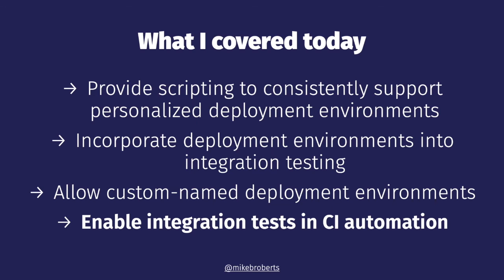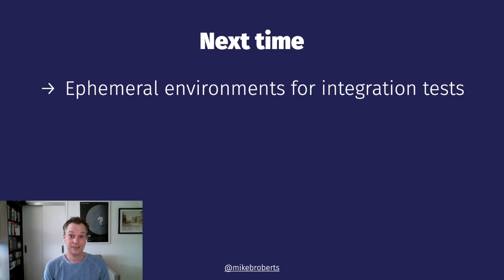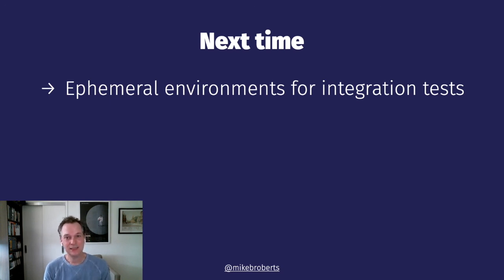That wraps it up for this episode. Today I built on the integration test work from last time. First, I provided scripting to consistently support personalized deployment environments. Then I incorporated these deployment environments into integration testing. Third, I allowed custom named deployment environments. And finally, I used a custom named environment to enable integration tests in our CI automation. Getting automated integration tests running against our application in the cloud is good. Enabling them in CI automation like we've done this time is better. But what is best is if we can use an entirely new deployment environment every single time we run our integration tests — and that's what I'm going to show you how to do next time.